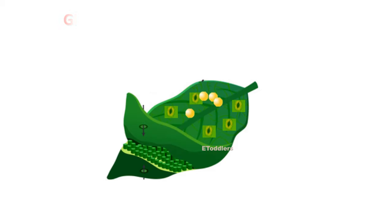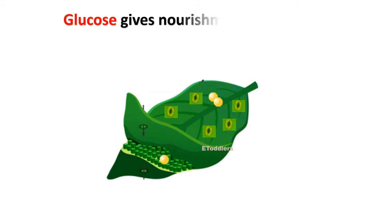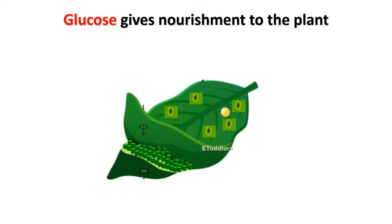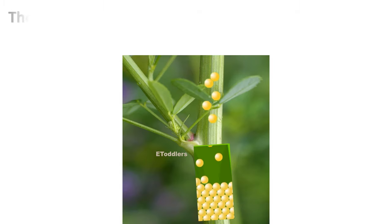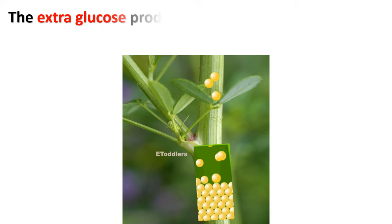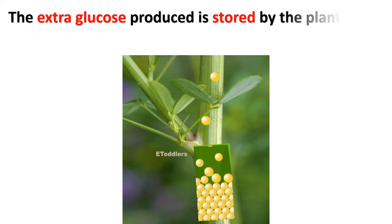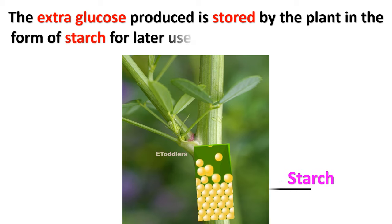Glucose gives nourishment to the plant. The extra glucose produced is stored by the plant in the form of starch for later use.